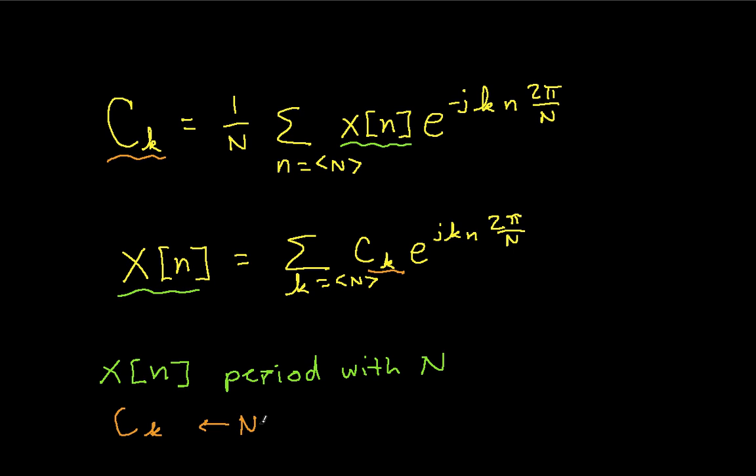So they'll end up being N distinct values and then they repeat. This is different from the continuous time Fourier series, in which you have an infinite number of coefficients. For the discrete time Fourier series, you have a finite number of coefficients — the same number of coefficients as you have samples of your signal.